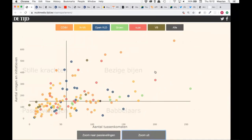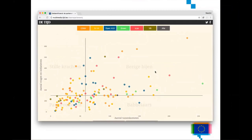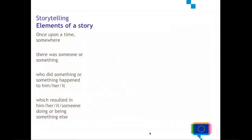This was a little story that I told you, and it contains the main building blocks that all stories share. I told you a story about once upon a time somewhere — a couple of years ago in Flanders, in the Flemish parliament. This was the context, the setting of the stage. And then there was someone: the president of the parliament. So this is the character of the story, situated in that context.